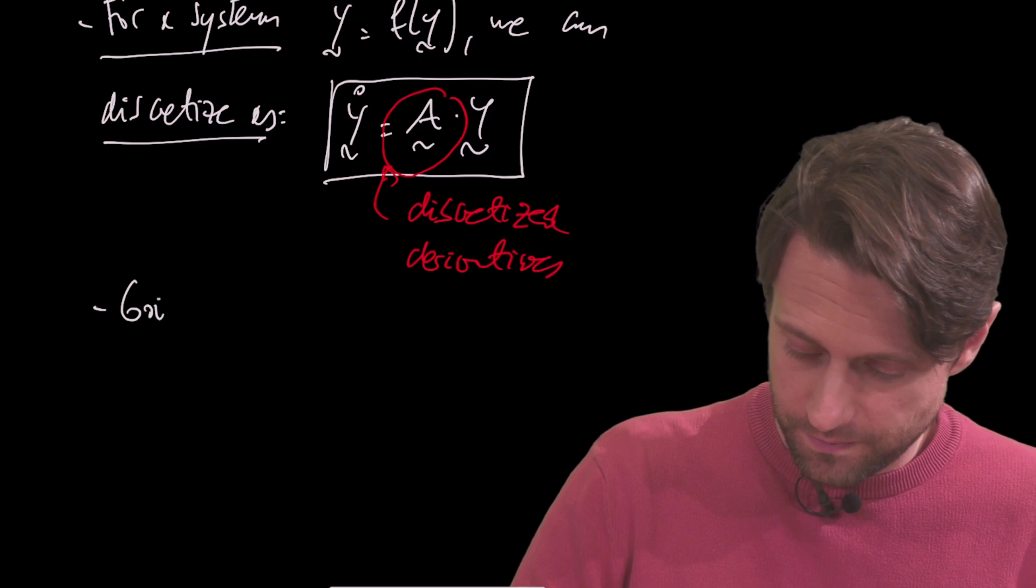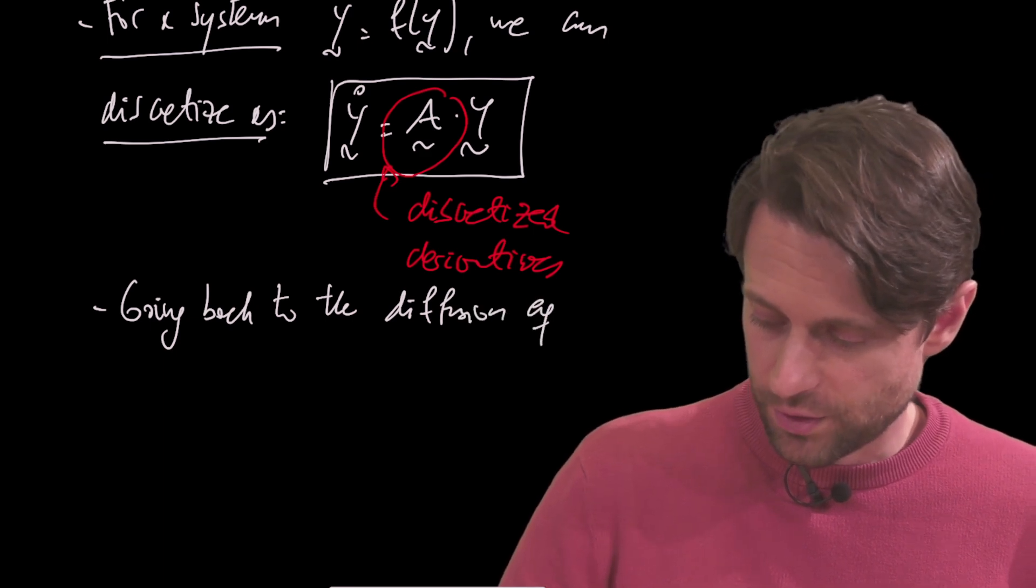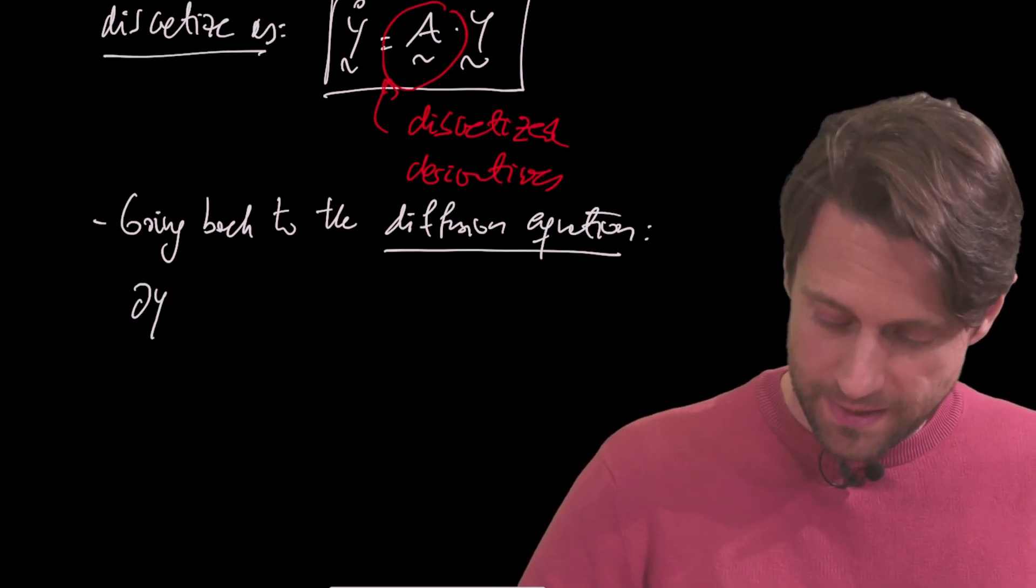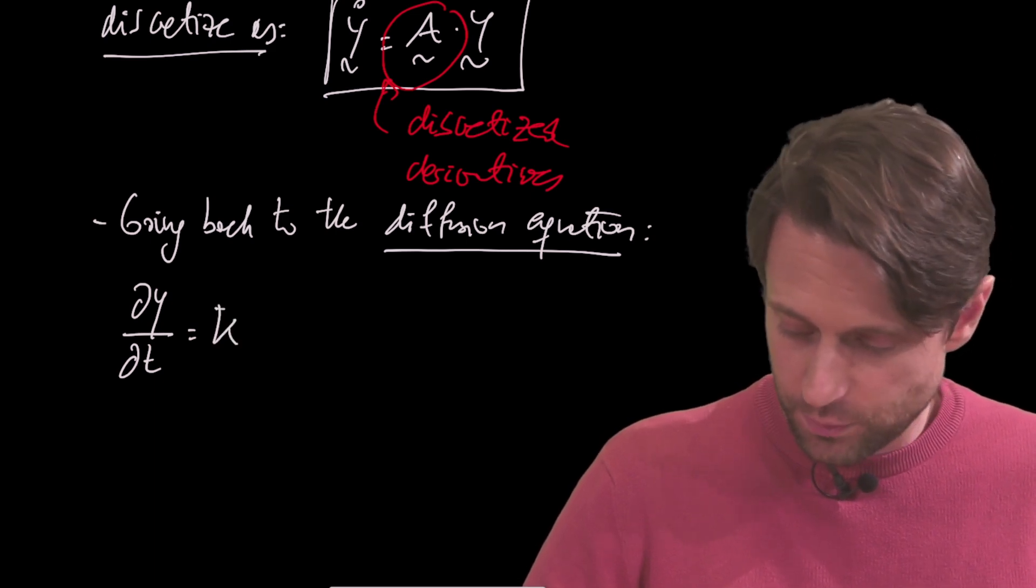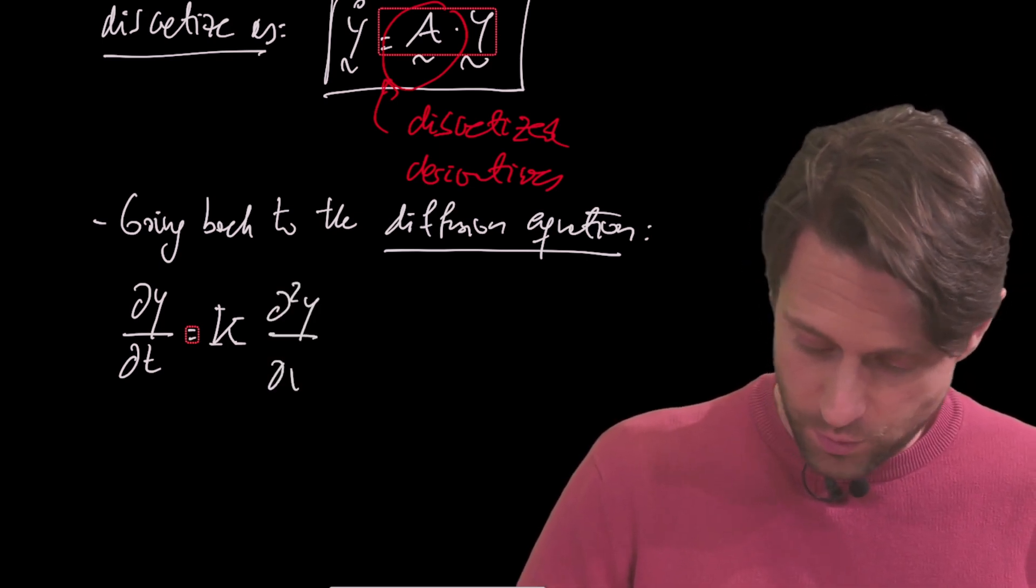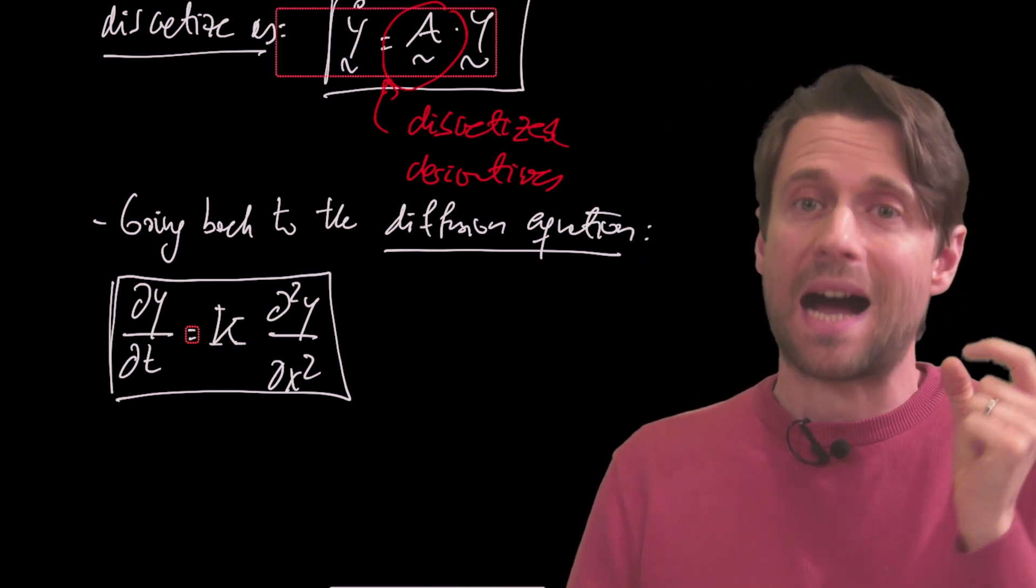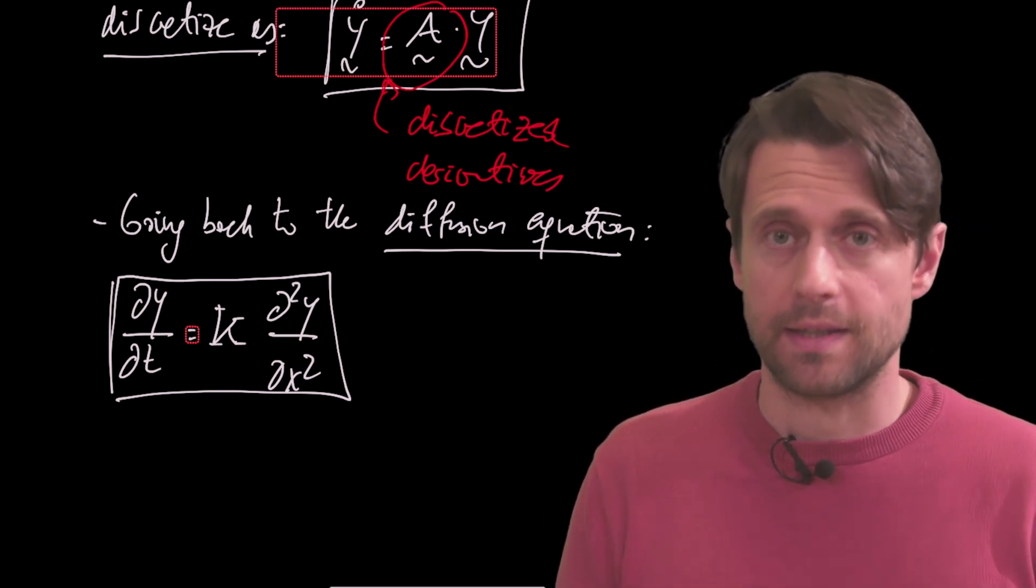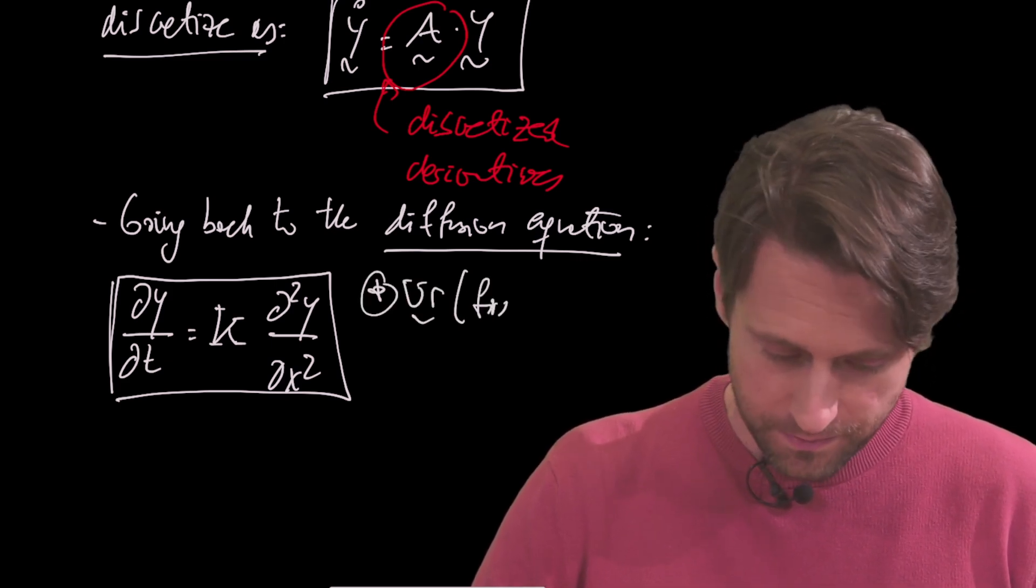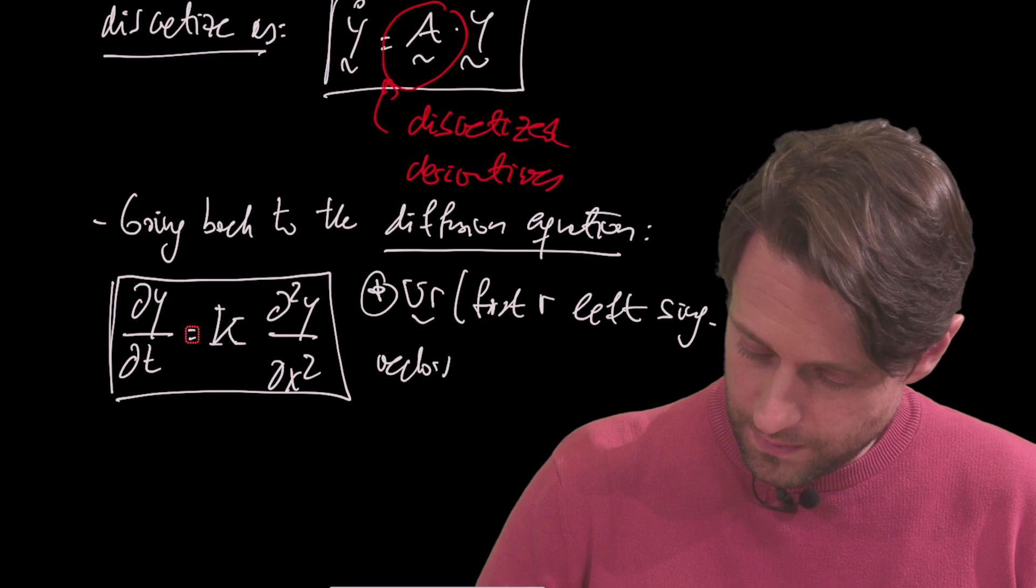Going back to the diffusion equation, so that we can put things in context with what we saw in the previous video. What I have now is ∂Y/∂t times some constant, which again is the diffusivity or the conductivity if we're talking about temperature, ∂²Y/∂x². So that's the spatial derivative. Remember that U_R contains the left singular modes. They are the leading left singular vectors, actually the leading POD modes.